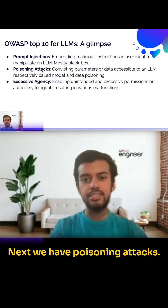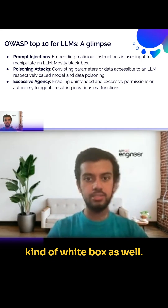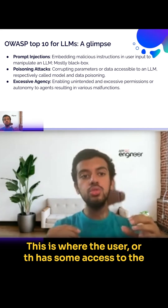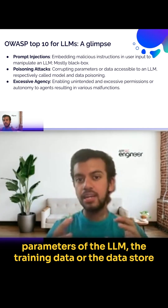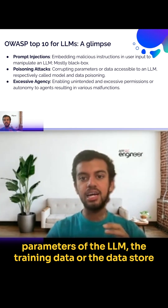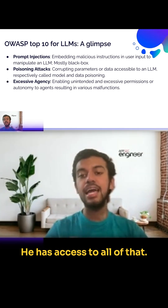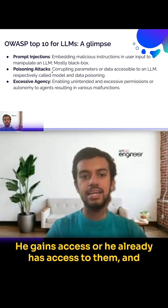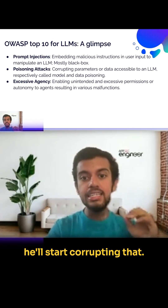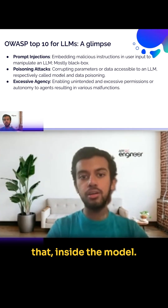Next, we have poisoning attacks. Poisoning attacks are a mix of black box and white box. This is where the attacker has some access to the parameters of the LLM, the training data, the data store, or the system prompts. He gains access to these and starts corrupting them, embedding malicious content inside the model.